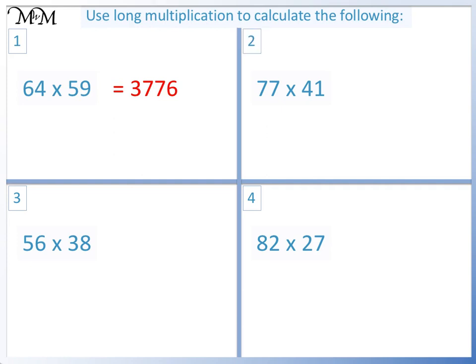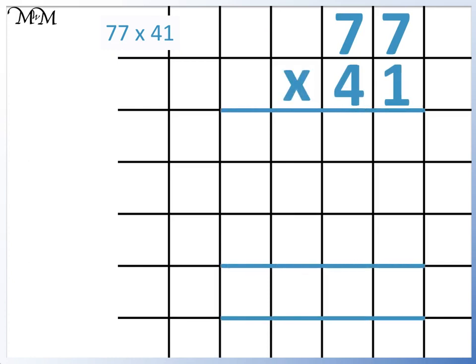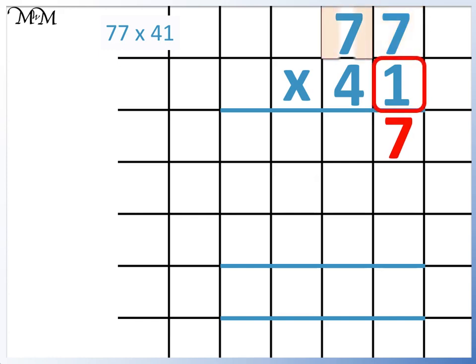Question 2: 77 times 41. Starting with 77 times 1. 1 times 7 equals 7, and 1 times 7 equals 7. You may have already noticed that 1 lot of 77 will equal 77.